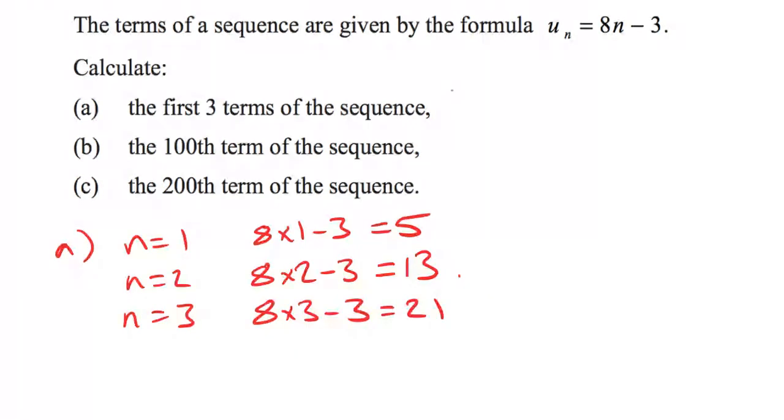8 times 3 minus 3, that's going to be 21. So the first three terms in the sequence are 5, 13, and 21. We have found U_1, U_2, and U_3.